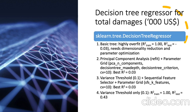We tried principal component analysis and parameter optimization with a parameter grid, playing around with the number of components, max depth of the tree, and the criterion — mean absolute error or mean squared error. After cross-validation, the best R-squared was still quite low at 0.03. We also tried a variance threshold, dropping any feature with variance less than 0.1, and a sequential feature selector with a parameter grid looking at different numbers of features. Again, after cross-validation, our best R-squared was still 0.03 — pretty bad.